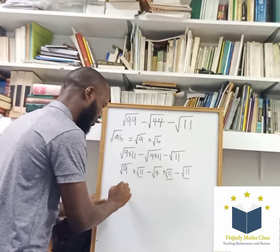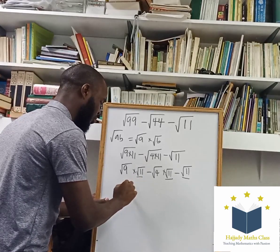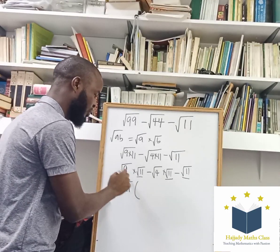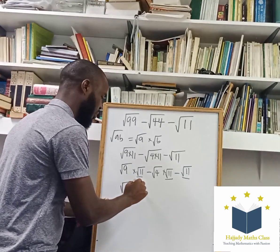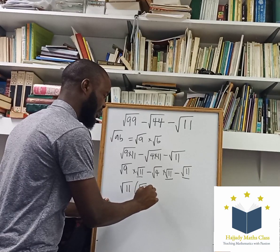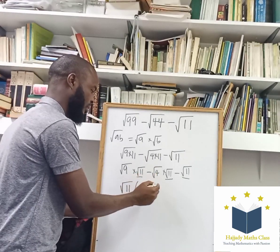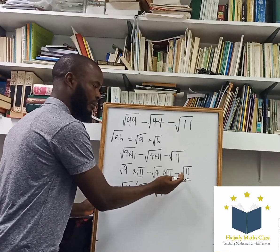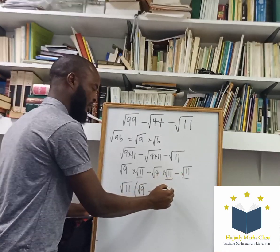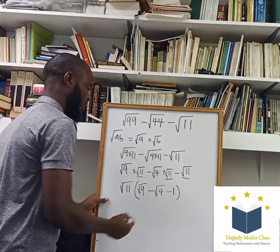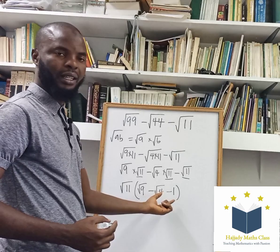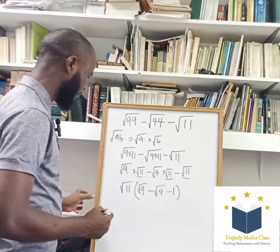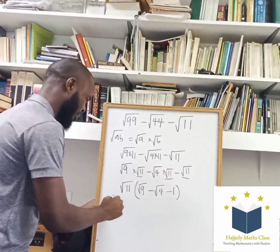Factoring out root 11, we write the square root of 11 outside. In our parentheses, we are left with the square root of 9 minus the square root of 4 minus 1. If you use this to multiply what is inside the bracket, you are still going to get the same expression.